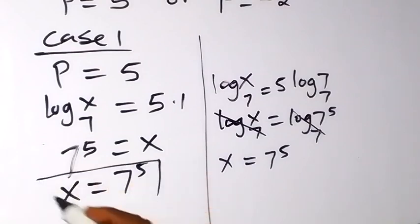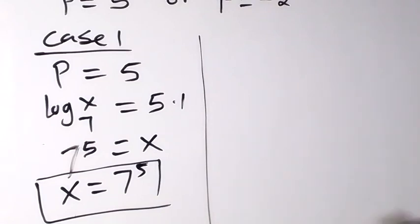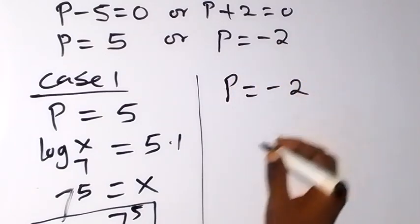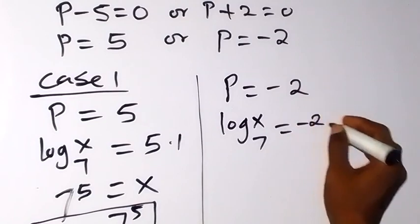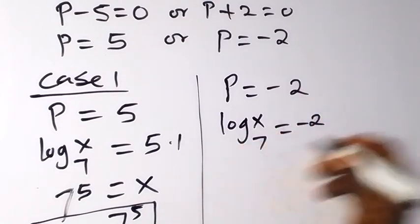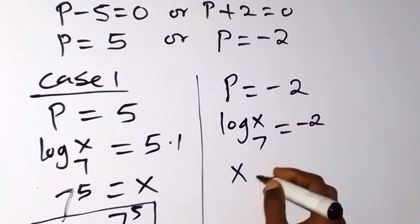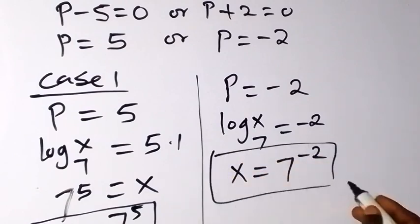So x = 7⁵ is one value of x. For Case 2, when p = −2: recalling that p = log(x base 7) = −2, applying the log-to-index relationship, 7 raised to power −2 equals x. So x = 7⁻².